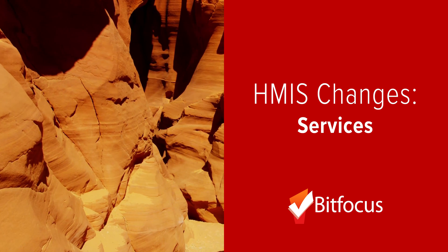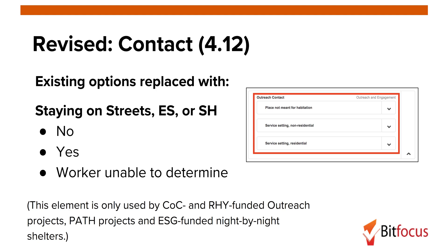Now we'll review changes to services. Outreach contacts captured by outreach projects, PATH projects, and ESG-funded night-by-night shelters were previously collected based on the location of contact, such as a place not meant for human habitation or a service setting. With the 2017 data standards, contact will be reported based on whether or not the client was staying on the streets, in an emergency shelter, or in a safe haven. If the worker is not able to determine whether the client is staying in any of these locations, it will be possible to note that as well.